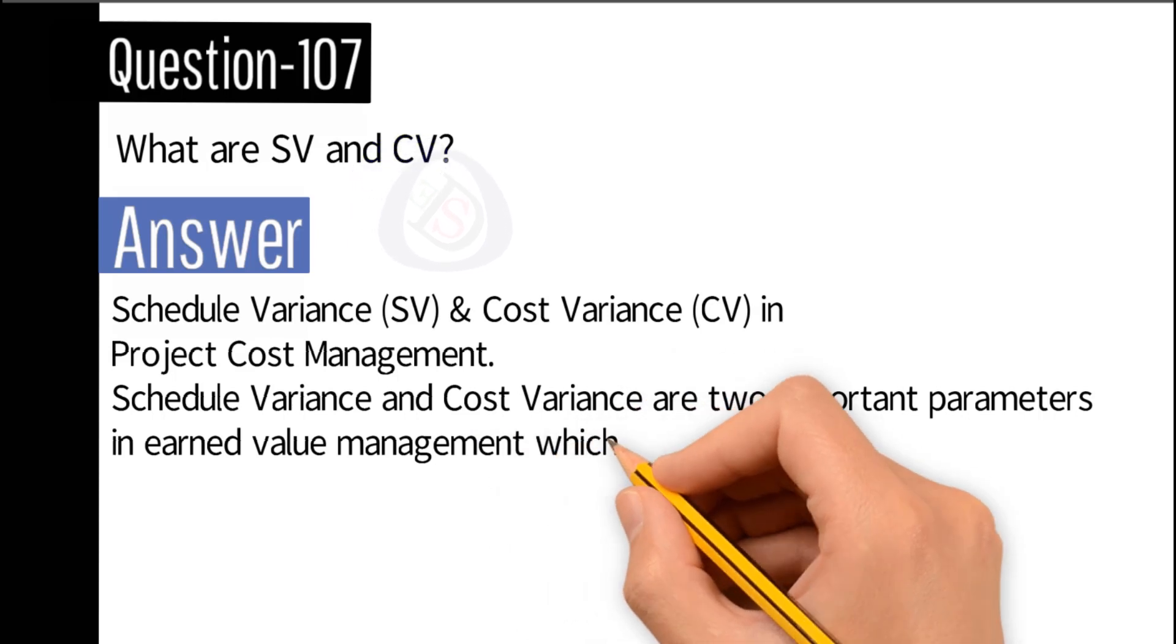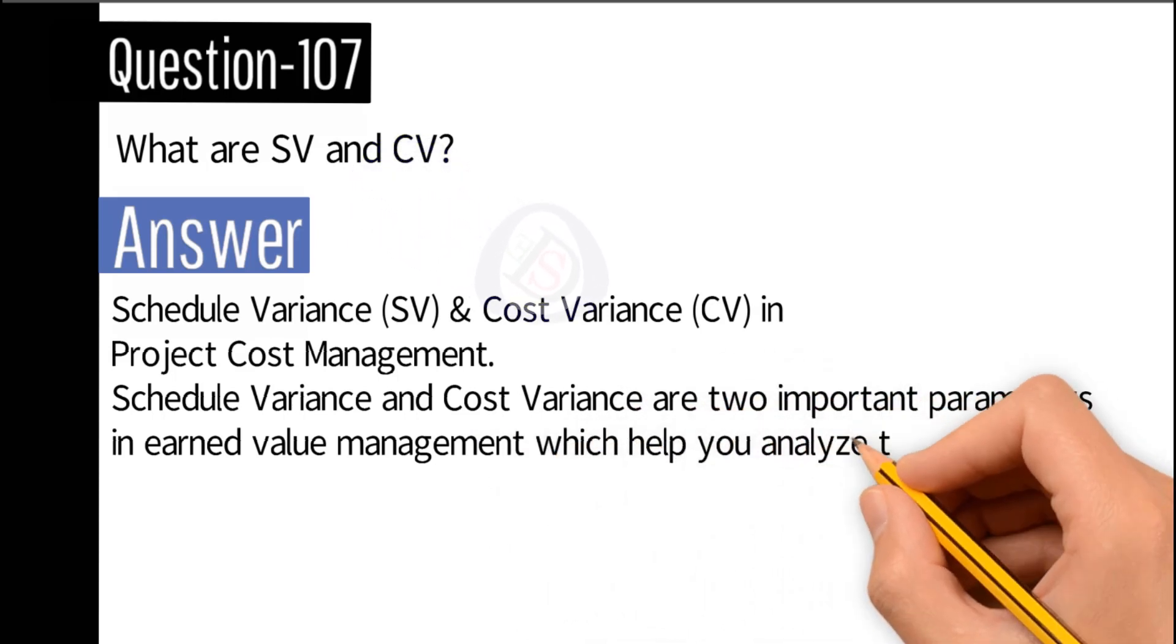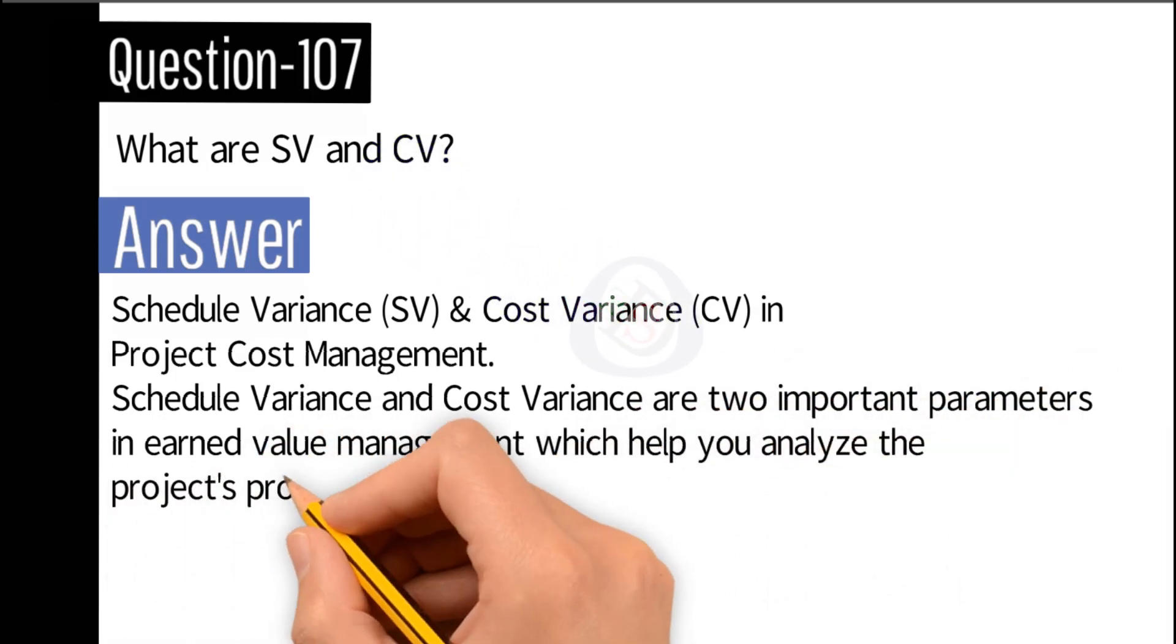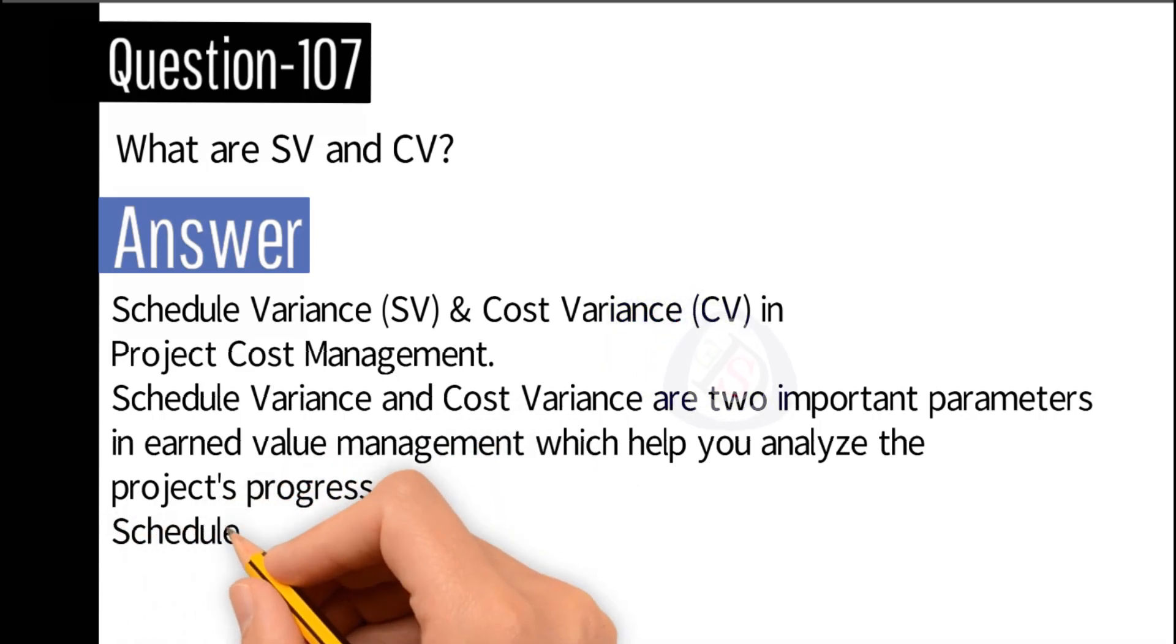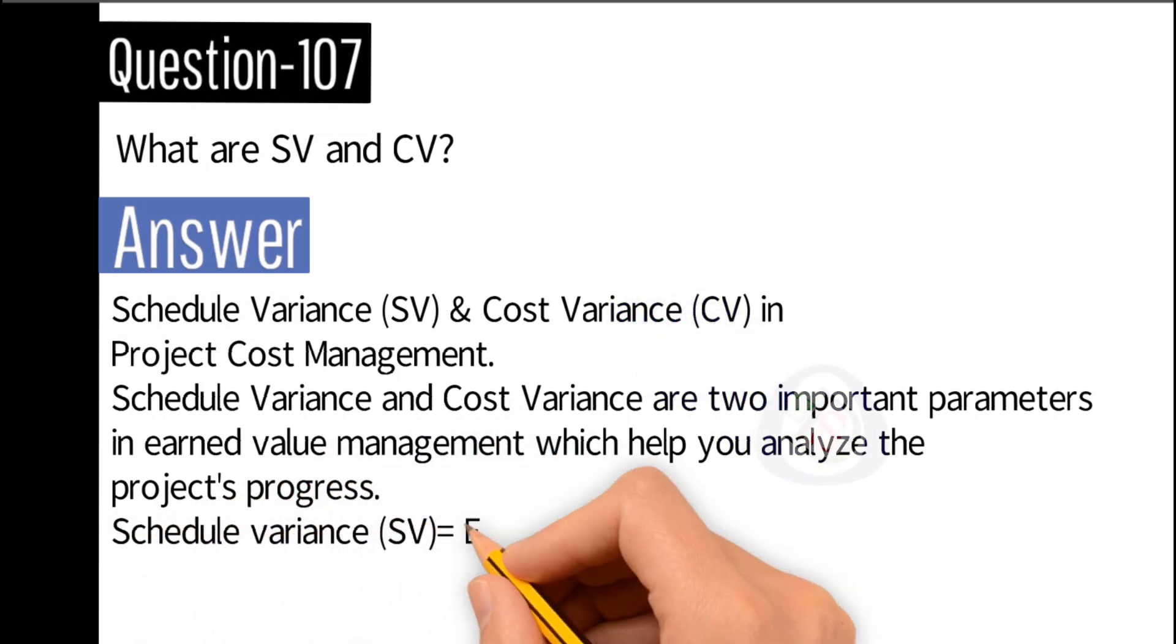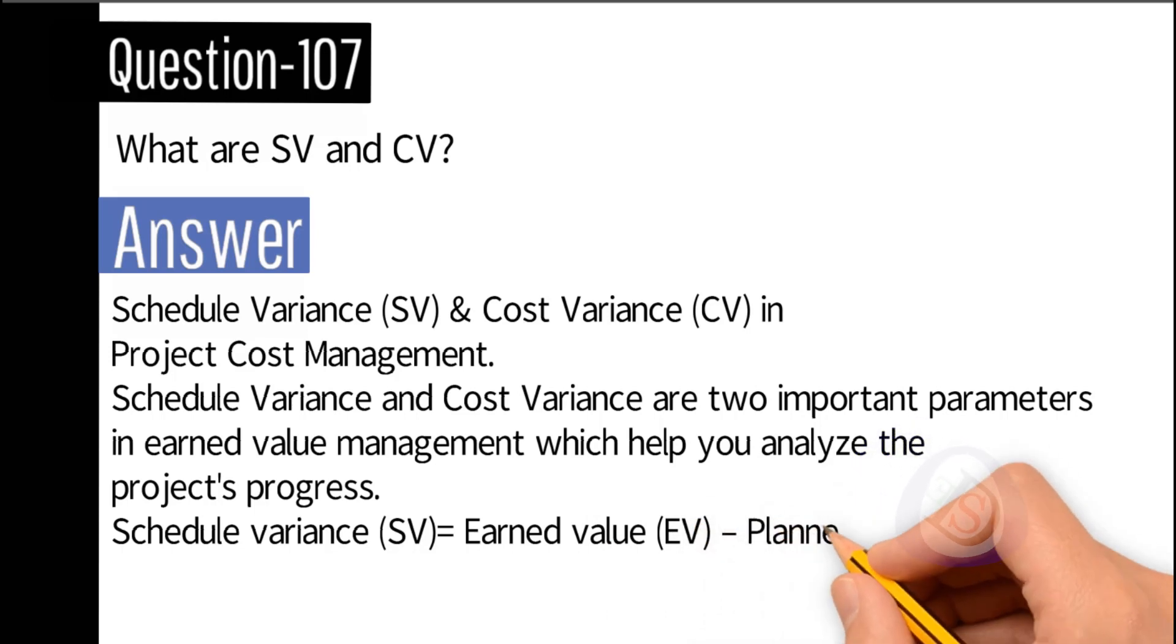Schedule variance: SV equals earned value (EV) minus planned value (PV). Cost variance: CV equals earned value (EV) minus actual cost (AC).